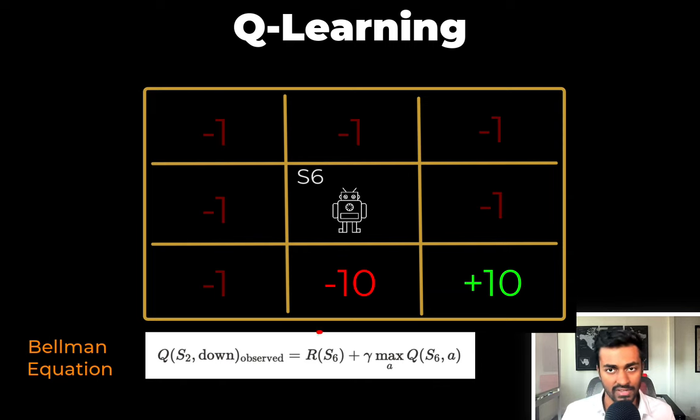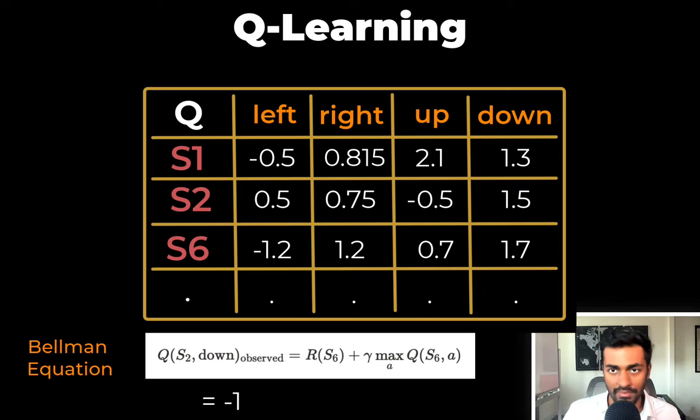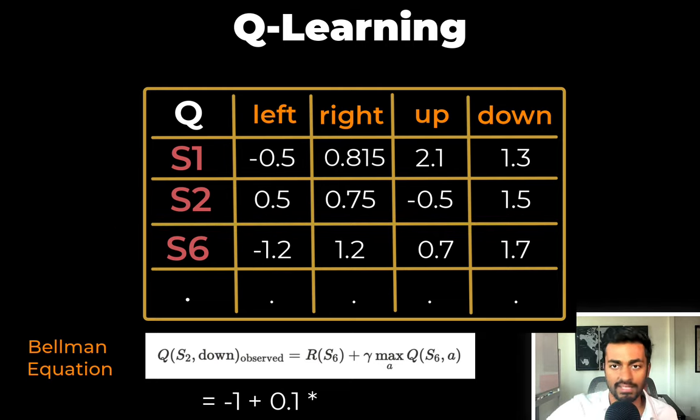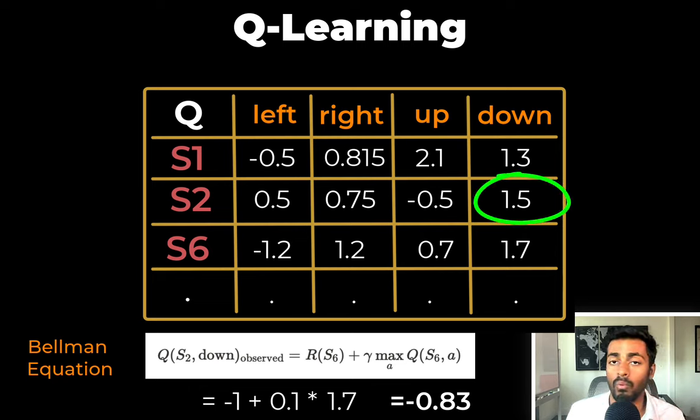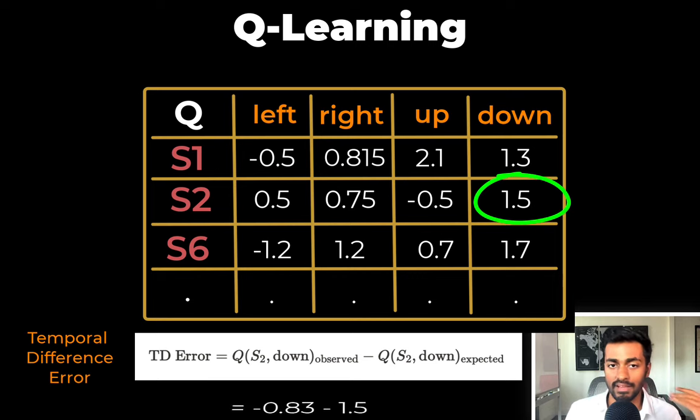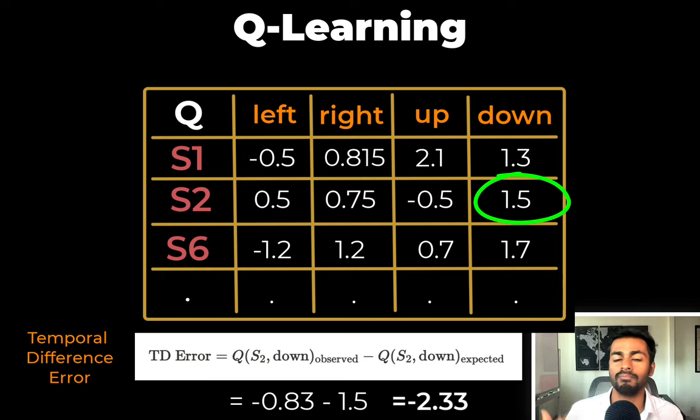Now let's calculate the observed Q value that is given by the Bellman equation. So the Q value observed is going to be the reward in transitioning into state S6, plus the discounted maximum value that we can obtain for state S6. And so we know that the reward for state S6 is negative one. And from our table, when we are in state S6, the maximum possible Q value is going to be 1.7. And this is the value if we choose to go in the downward direction from S6. So we substitute that in the equation, and we get negative 0.83. Now this is the observed value, but the expected value that is stored in the table for this cell is 1.5. And so the temporal difference there is going to be the difference of the observed minus the expected. Negative 0.83 minus 1.5, and we'll get negative 2.33.